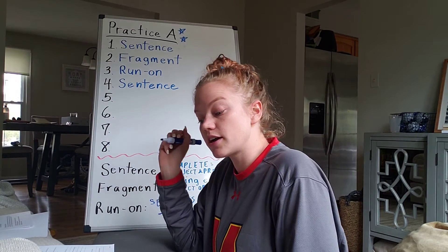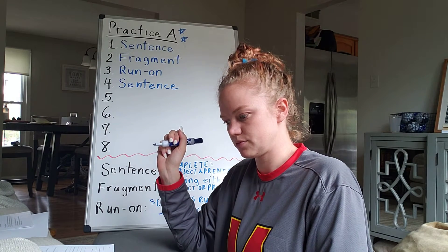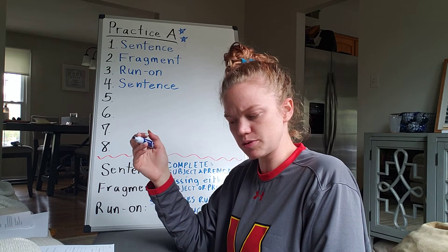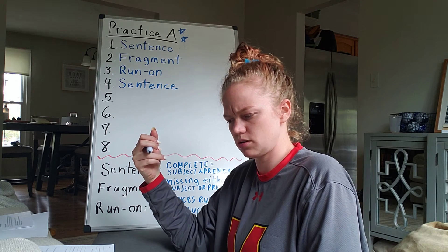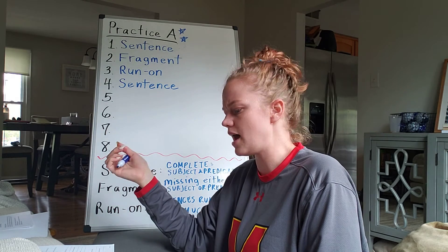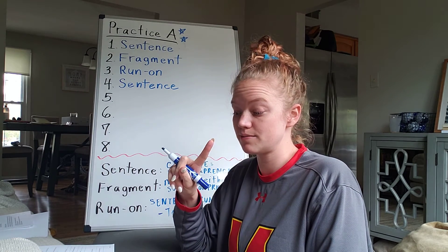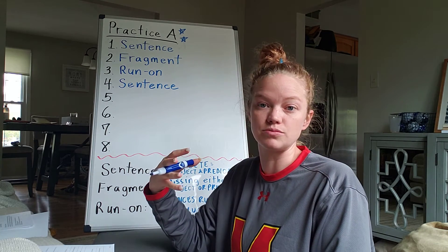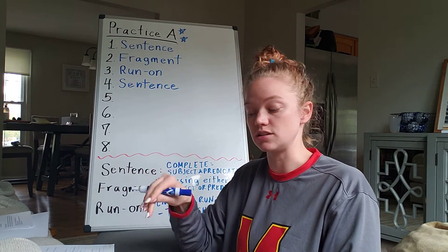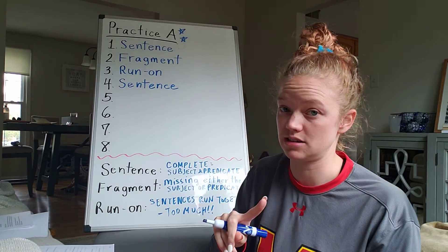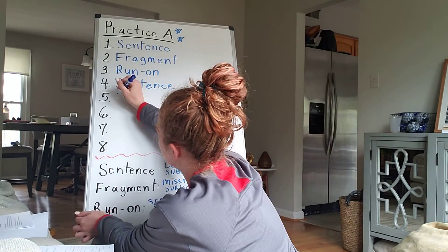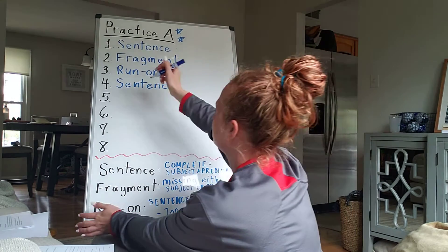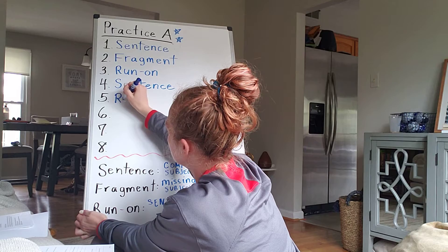Let's look at number five: they encouraged him. They helped him. I've got subject and predicate — they and encouraged. But I'm also seeing they and helped. I believe this is a run-on. I would need to have some sort of conjunction connecting these two thoughts together to make this a proper, readable sentence. Number five is a run-on.